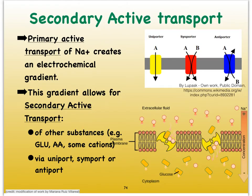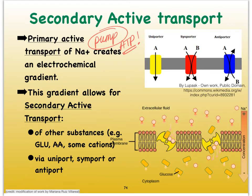To review: it is the primary active transport of sodium — with the help of the sodium-potassium pump, requiring ATP — that sets up the electrochemical gradient. It's that electrochemical gradient that provides the energy allowing sodium to move passively on the other side of the cell membrane. We call that secondary active transport, which is actually a passive transport process requiring no ATP.